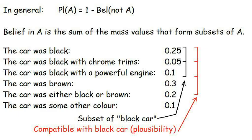Let's suppose that the witness mentioned the possibility that the car had chrome trims or possibly a powerful engine, but only if it was a black car. At this point, I might start to doubt that the witness was in his right mind, but let's just run with it. What's the belief in the statement, the car was black? Well, we now have three masses which might be considered subsets of that, including the bald statement, the car was black itself. Hey, the statement can be considered a subset of itself. The belief for the statement is found by adding the masses for those subsets, giving us the value of 0.4 as before. We don't include the possibility that the car was either black or brown, because that's not a subset of the car was black, as it includes the possibility the car was brown.